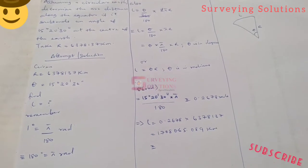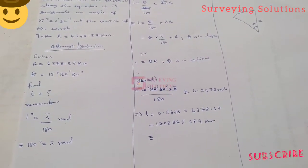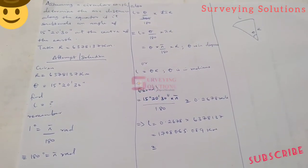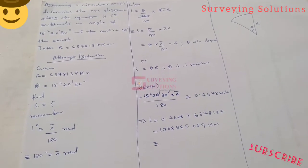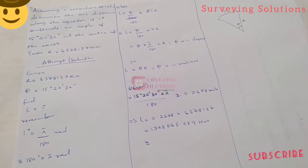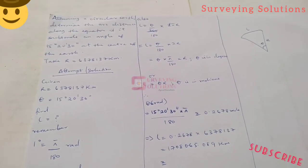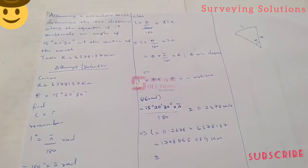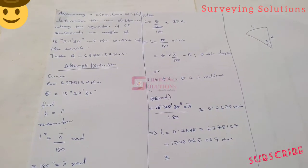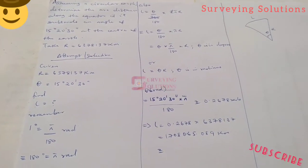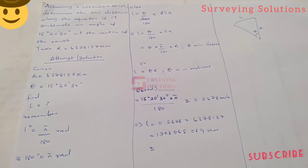By the time you carry out the calculation you should come up with 1708.065089 kilometers. That is the arc distance along the equator as it subtends that angle of 15°20'30".